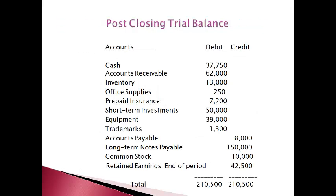The accountant prepares a post-closing trial balance after recording closing entries. The purpose of closing entries is to make the balance in all income statement accounts and dividends zero. Accounts with a zero balance are not shown on the post-closing trial balance. The post-closing trial balance reports only balance sheet accounts that are cumulative. This is the last step in the accounting cycle. Accounting for the next period begins and the cycle repeats. This post-closing trial balance is used to prepare the balance sheet and the cash flow statement.